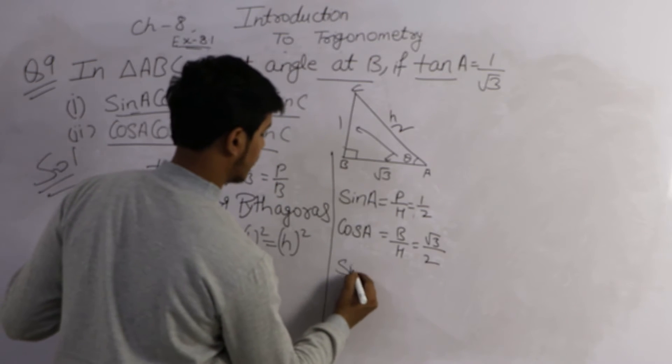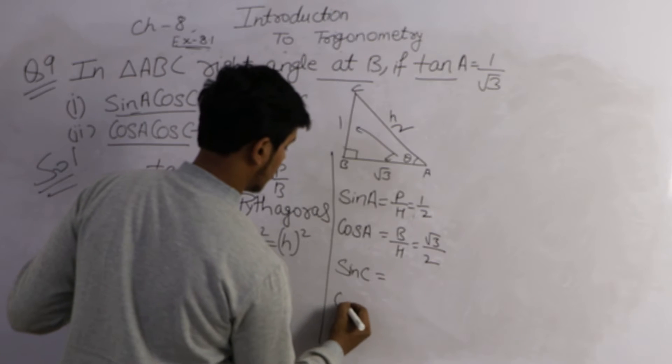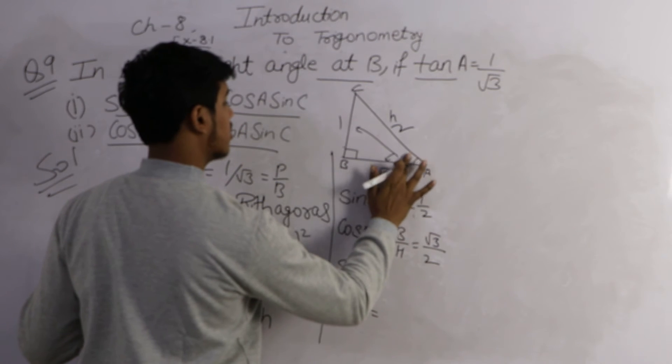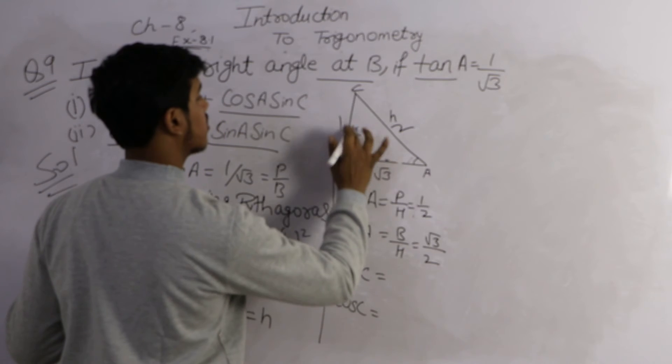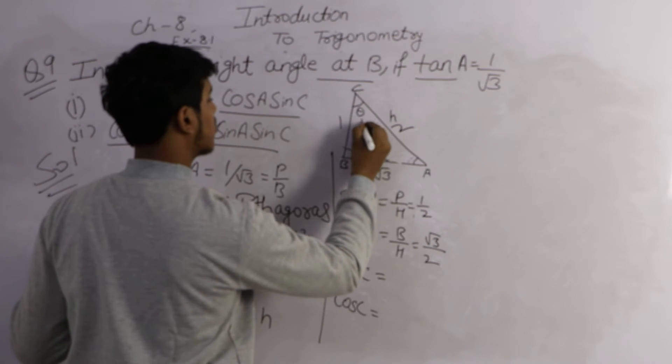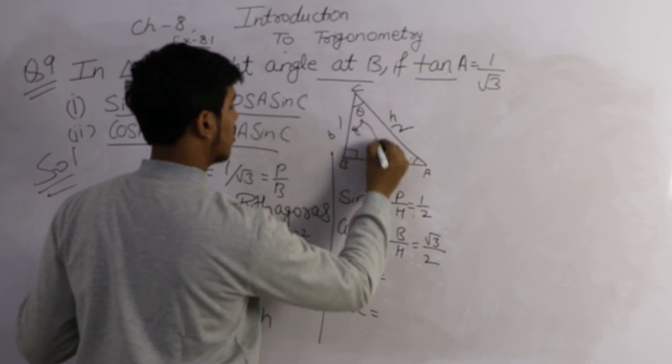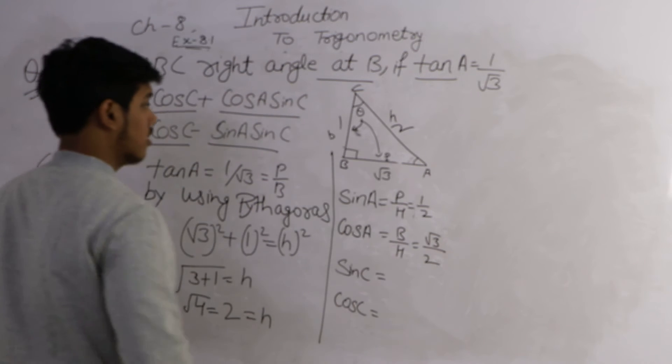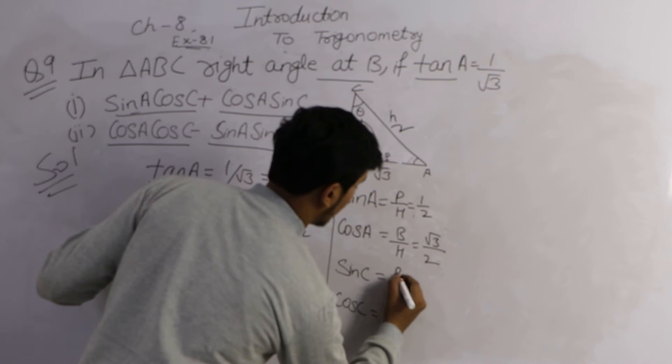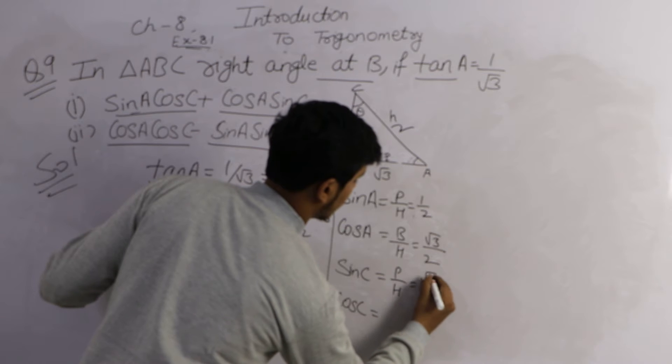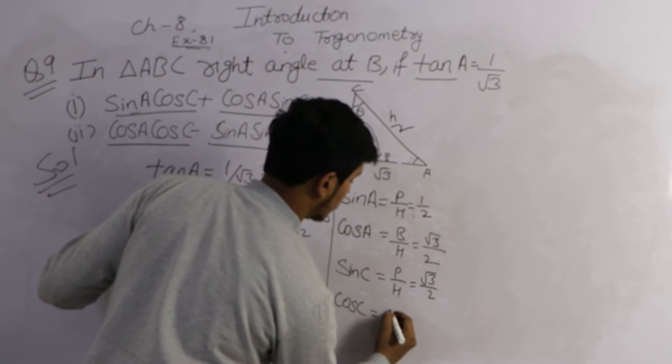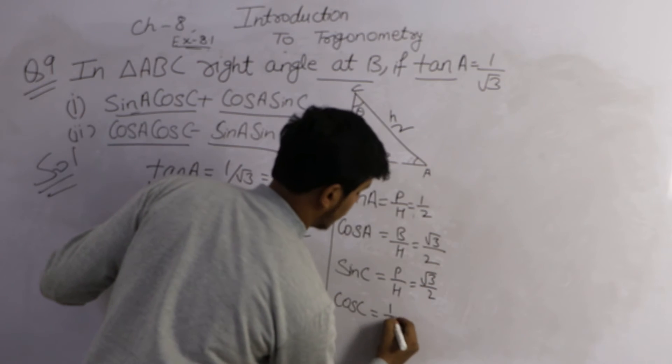Sin C and cos C. The theta changes from A to C, so the base is this and the perpendicular is this. Sin C, perpendicular upon hypotenuse means root 3 upon 2. Cos C, base upon hypotenuse means 1 by 2.